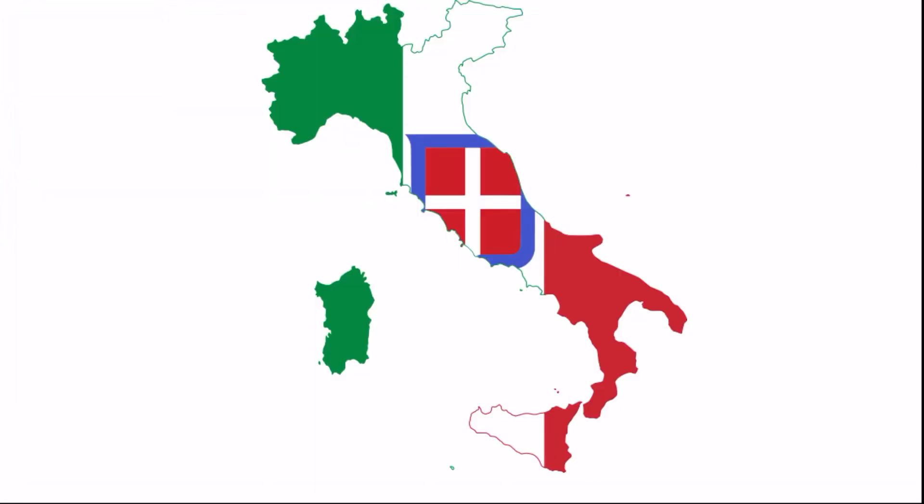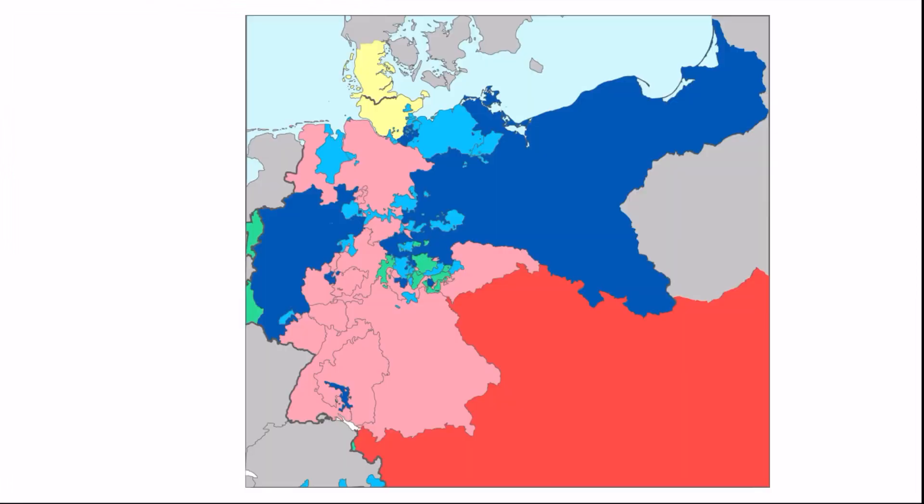After Italy unified, this is the beginning of the Kingdom of Italy. But note, this flag map is not entirely accurate, as some of the northeastern part was controlled by the Austrian Empire at this time, but this would all change with the Austro-Prussian War.